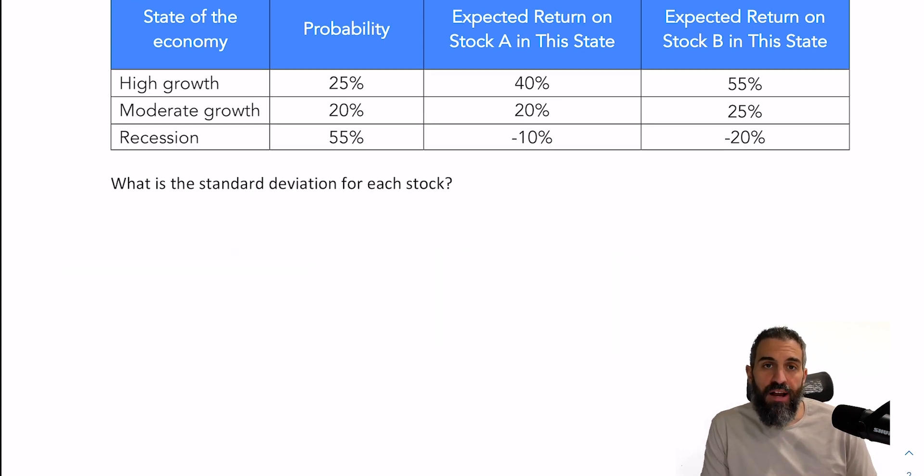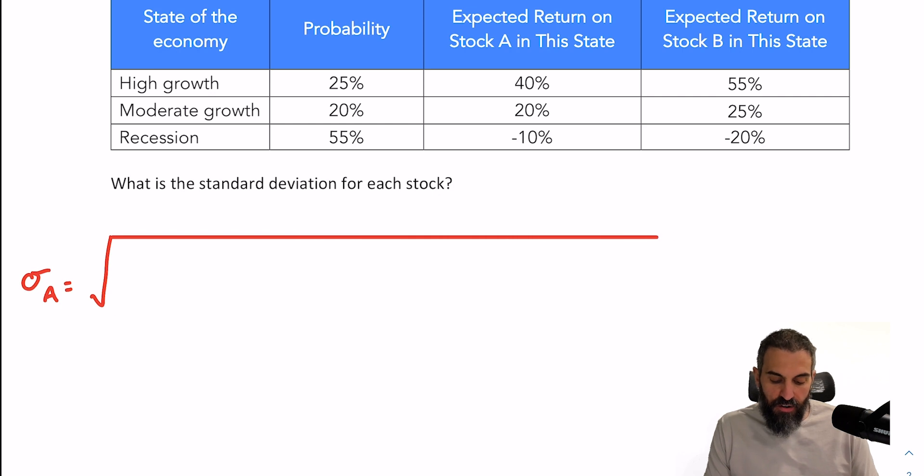Now the second question, you're asked to find the standard deviation of each stock. So for this, we're going to need the expected return from the previous question and use it in this formula. So to find the standard deviation for stock A, we'll do a big square root, otherwise you're finding the variance.